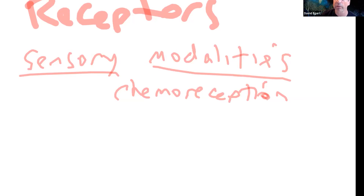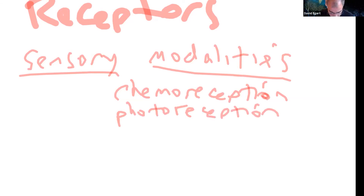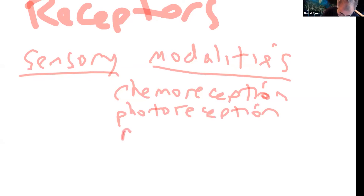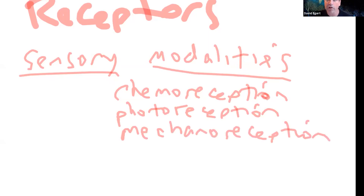Other sensory modalities include photoreception — detecting light. Touch is an example of mechanoreception — some physical deformation, bending, or stretching. Mechanoreception also includes hearing, which is just the vibration of your eardrum. It also includes the angle of your joints, the stretch of your muscles — when we saw that stretch receptor in your muscle for the stretch reflex, that's a mechanoreceptor as well.